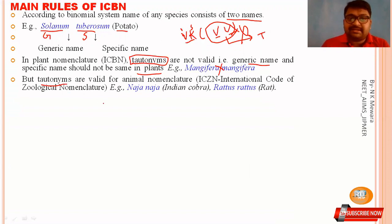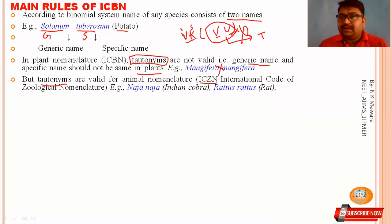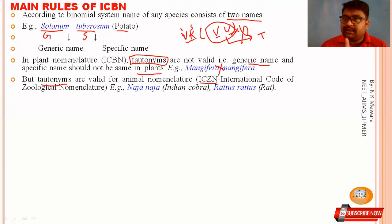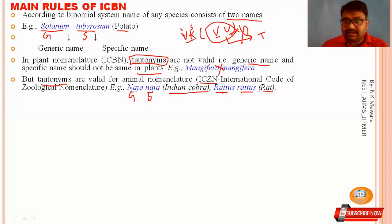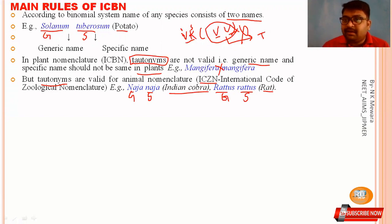Under ICZN, examples of tautonyms in animals include Naja naja, the Indian cobra, where both the generic name and species name are the same. Similarly, Rattus rattus is the rat's scientific name, where Rattus is the genus and the second name is the species. So tautonyms are only found in animals, not in plants.